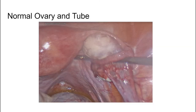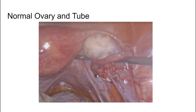Here we've got a normal ovary and normal tube laparoscopically. This has been lifted up so you can see it — a nice, smooth, normal-sized ovary. Here you've got the tube lifted up with the fimbrial end hanging below. It's not dilated, not tortuous, not swollen — just a nice, normal, healthy-looking tube and ovary.